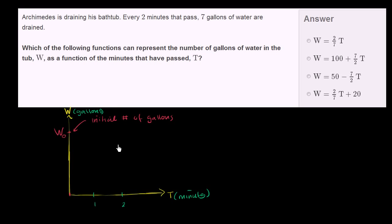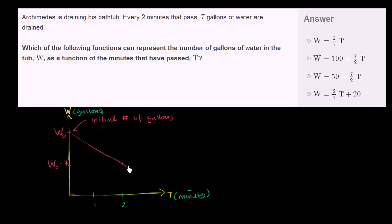After two minutes, we're going to get to W naught minus seven — however much water we had before, we're going to have seven gallons less. So if we were to plot the number of gallons we have as a function of time, it would look like a line that goes something like that.